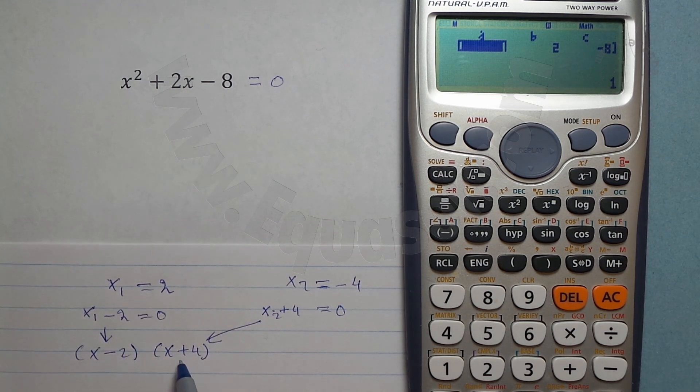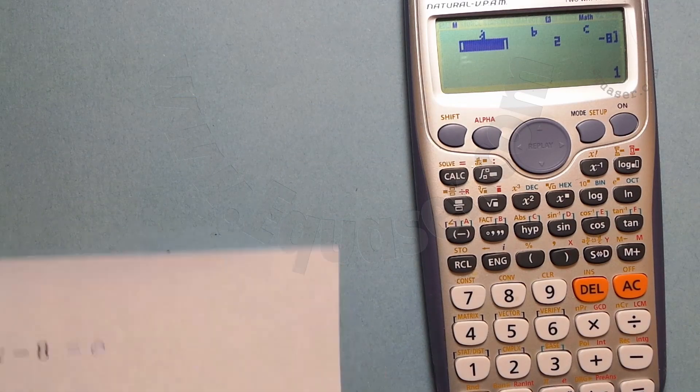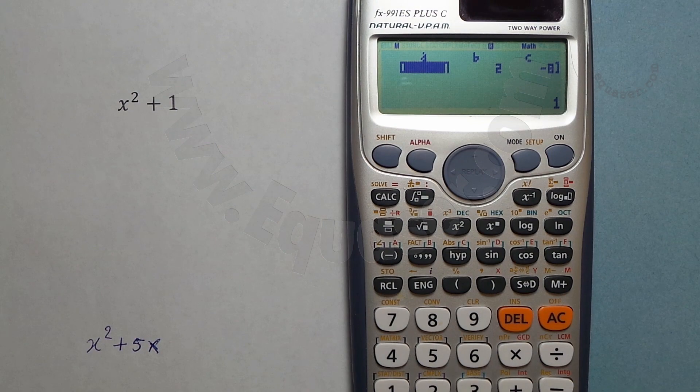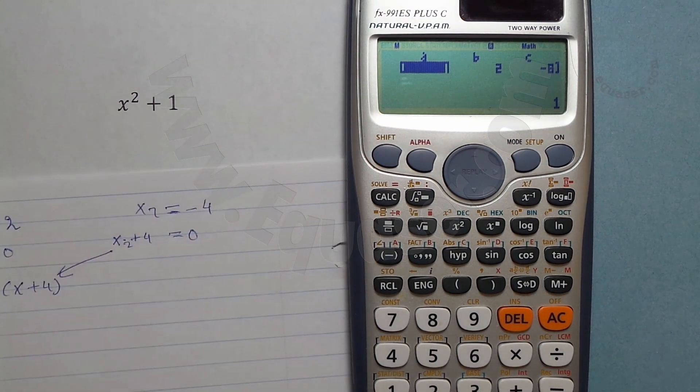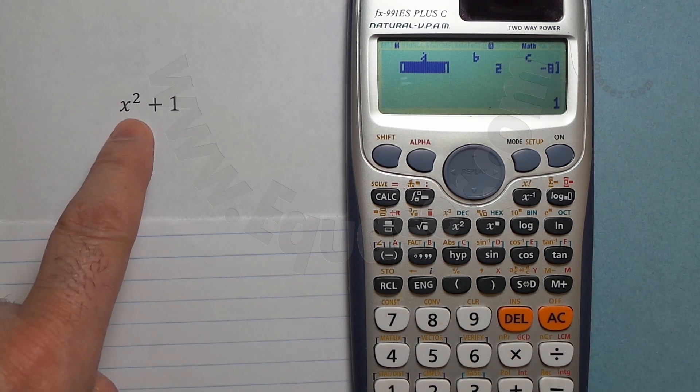And the same thing, if we add 4 to both sides, so x2 plus 4 equals 0. So we have x minus 2 and then we have x plus 4. This value, if we multiply this, we'll get that back, that value.